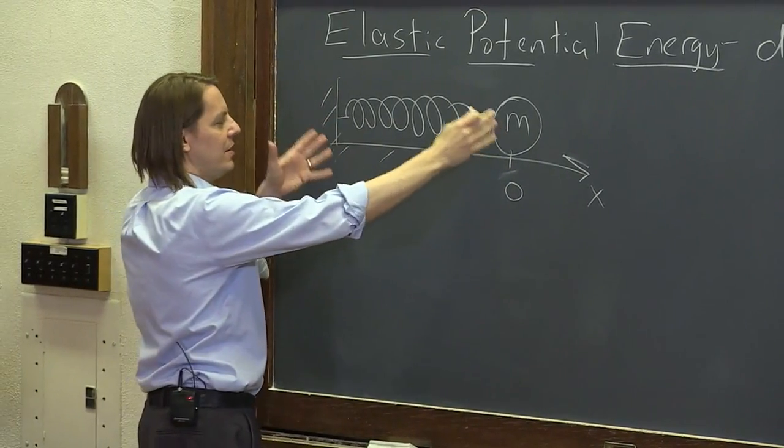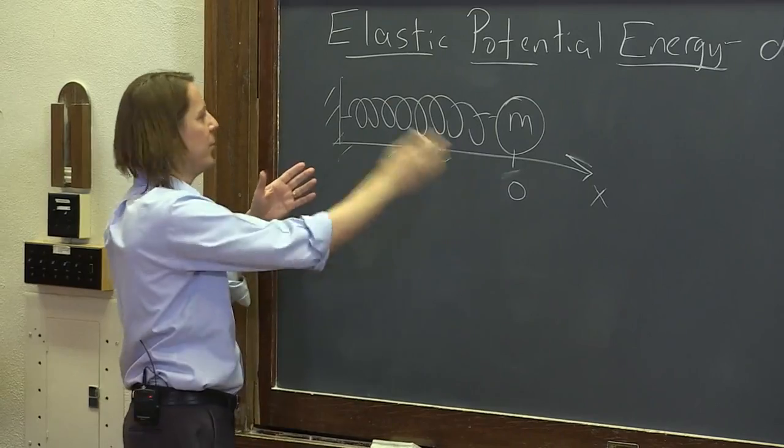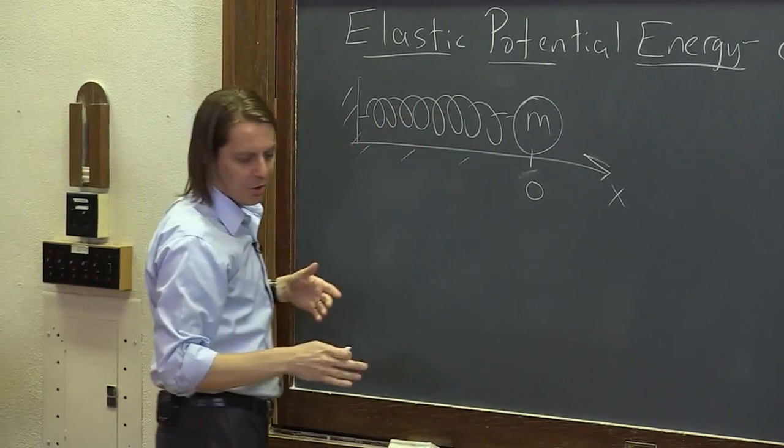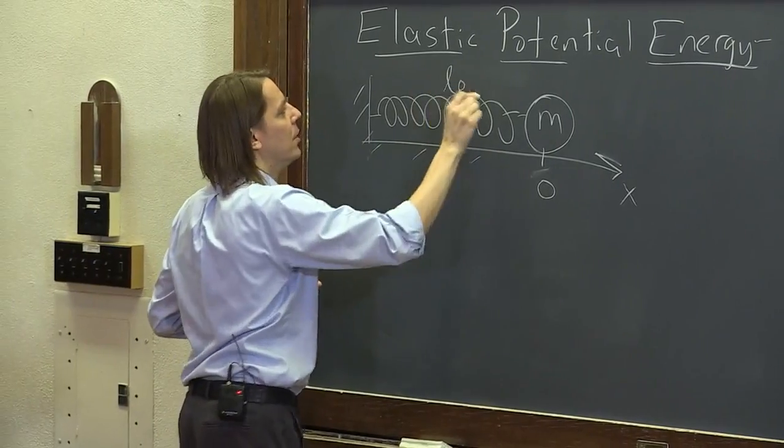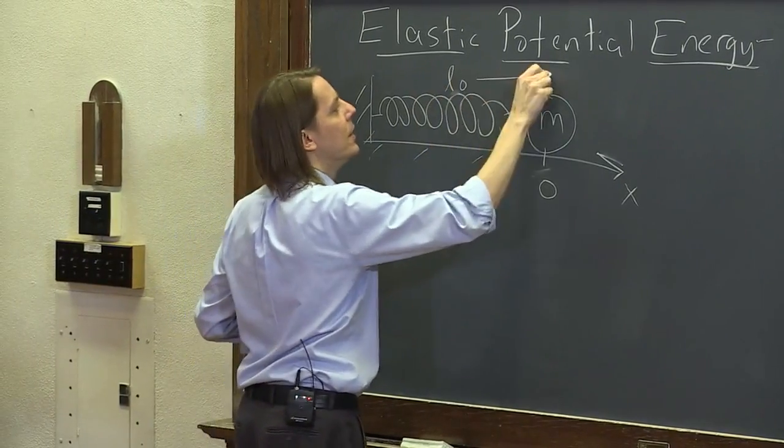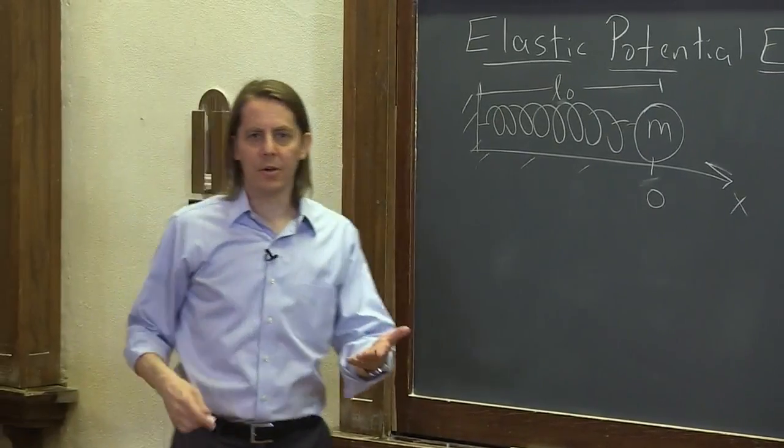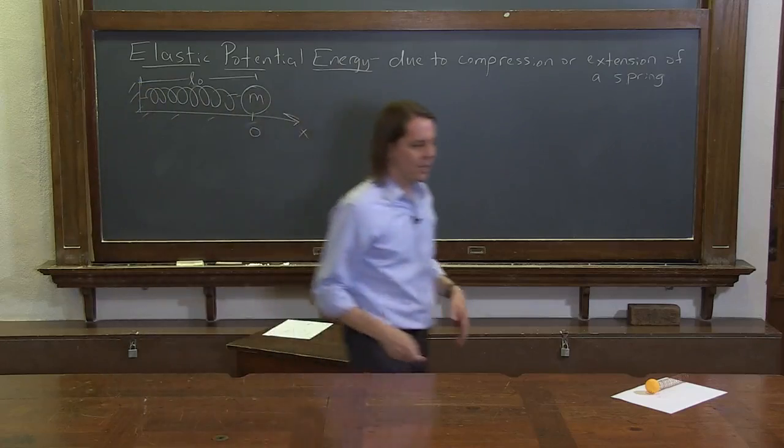The origin we could say is the natural length it wants to be. So the back of the spring is at x equals negative L, and we'll call this L naught, the natural length. If you don't apply any forces to it, it is L naught.